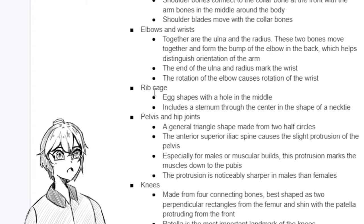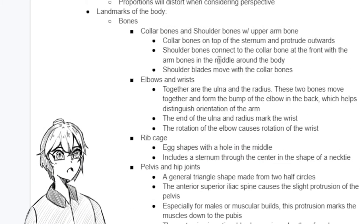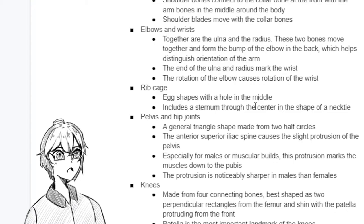Next is the rib cage, which Mogun goes over relatively quickly since it was addressed in earlier lectures. It's just an egg shape with a hole in the middle, and it includes the sternum, which is sort of like a necktie shape lying in the center of the rib cage. At the top of the sternum are the collar bones, with the ribs marking around the sternum. The sternum acts as a very good reference object to draw everything in accordance from the upper torso up towards the shoulders.